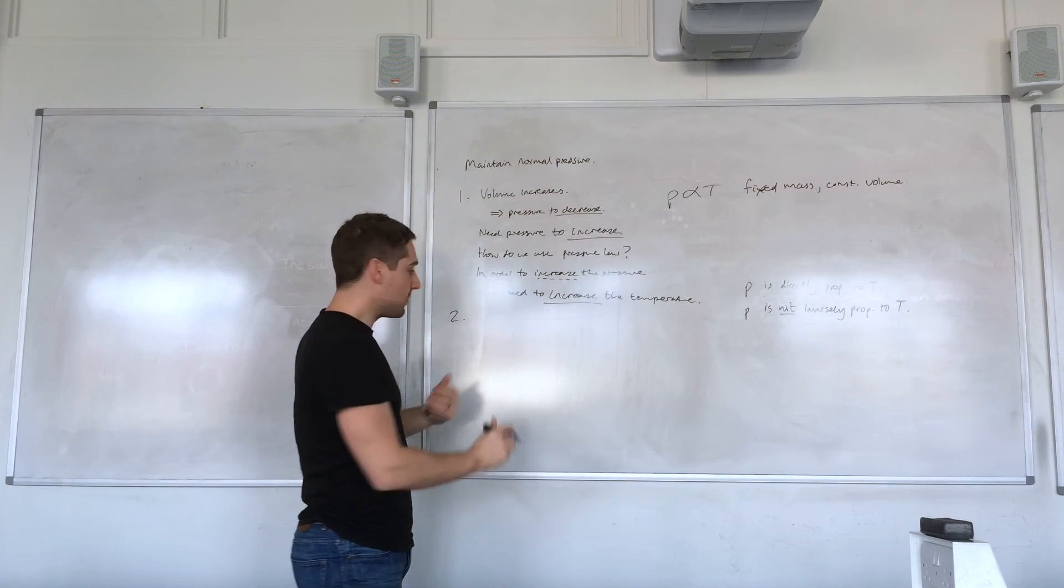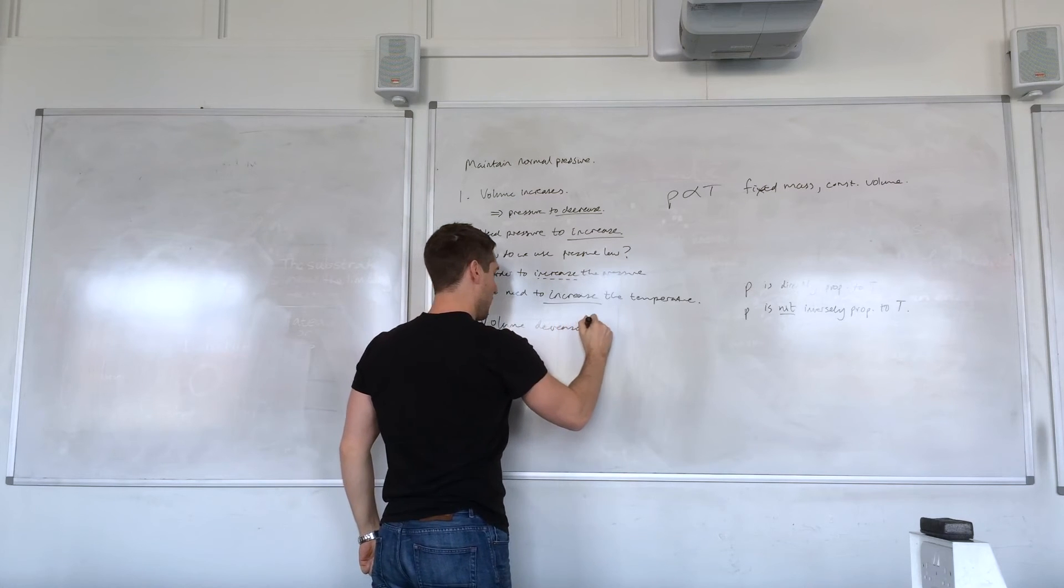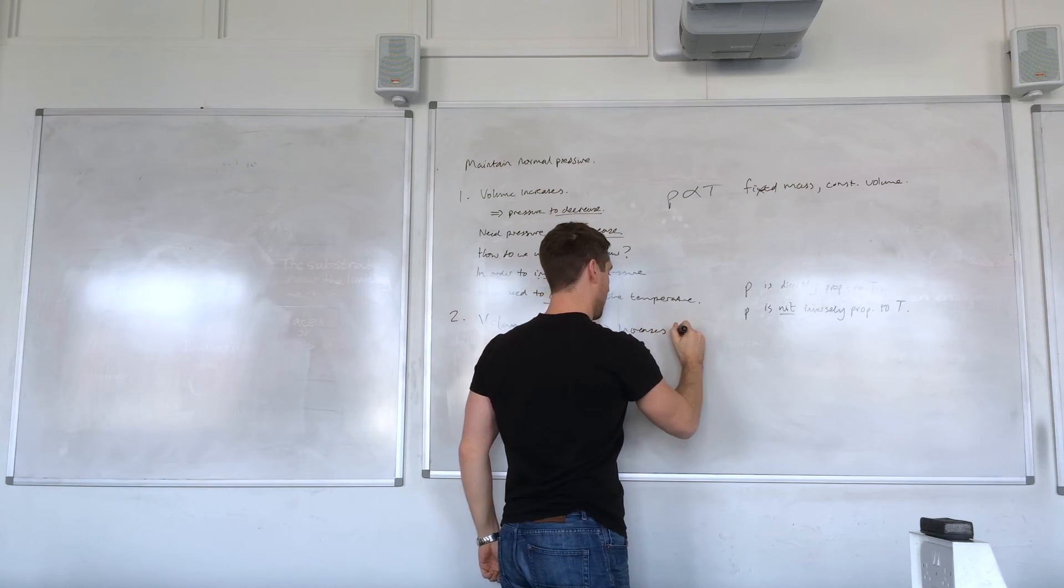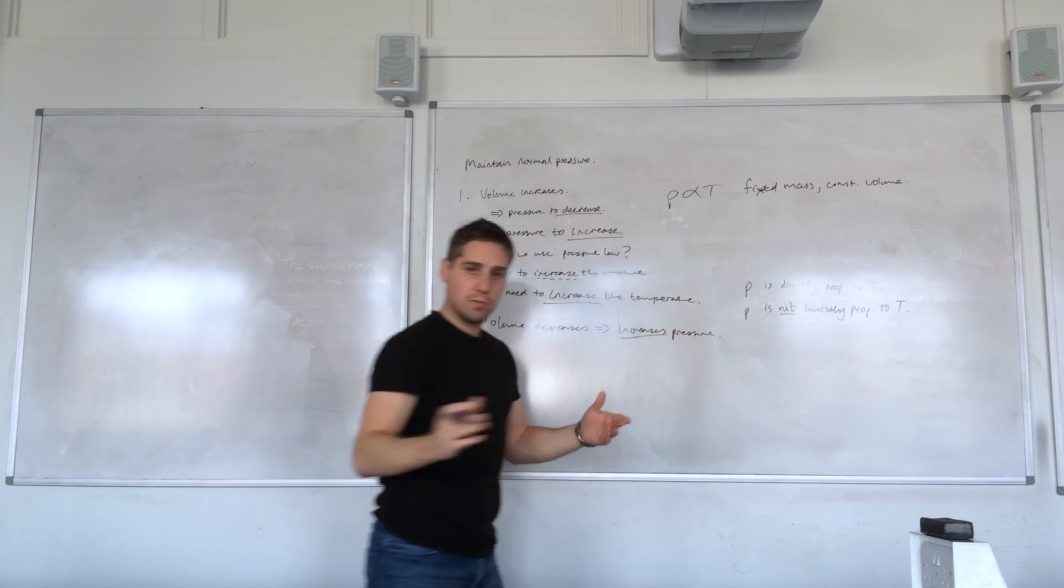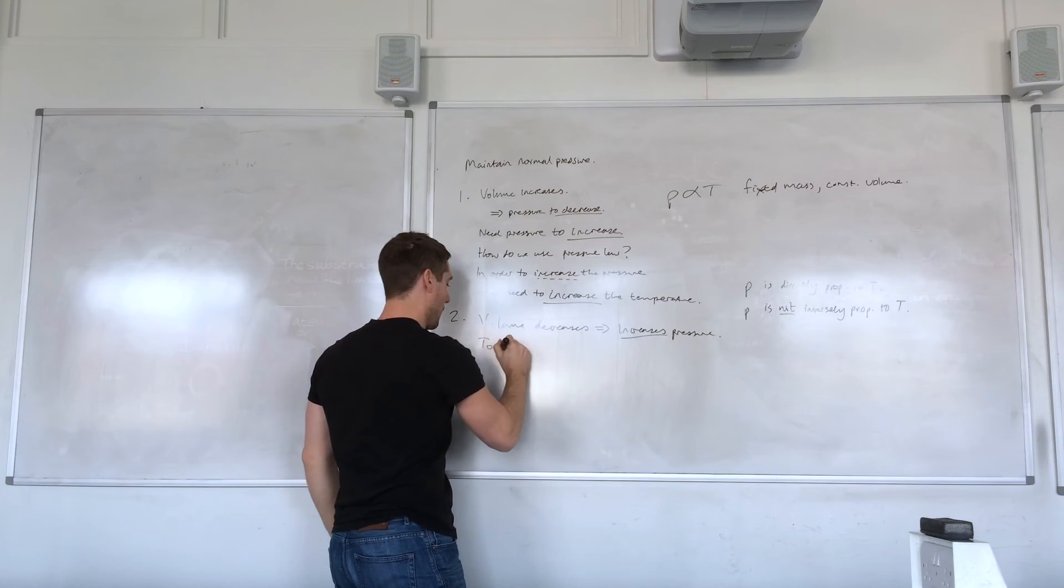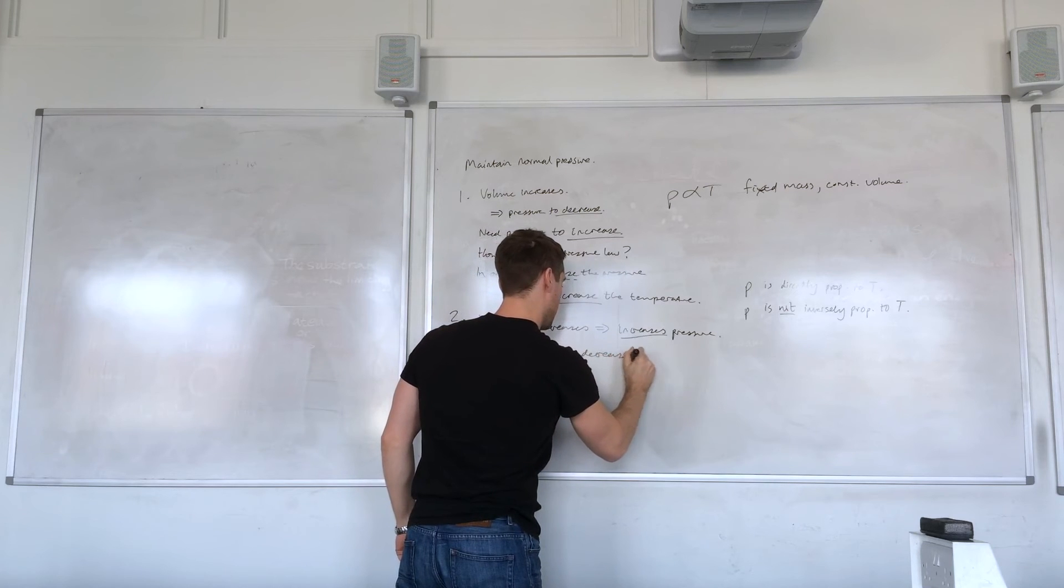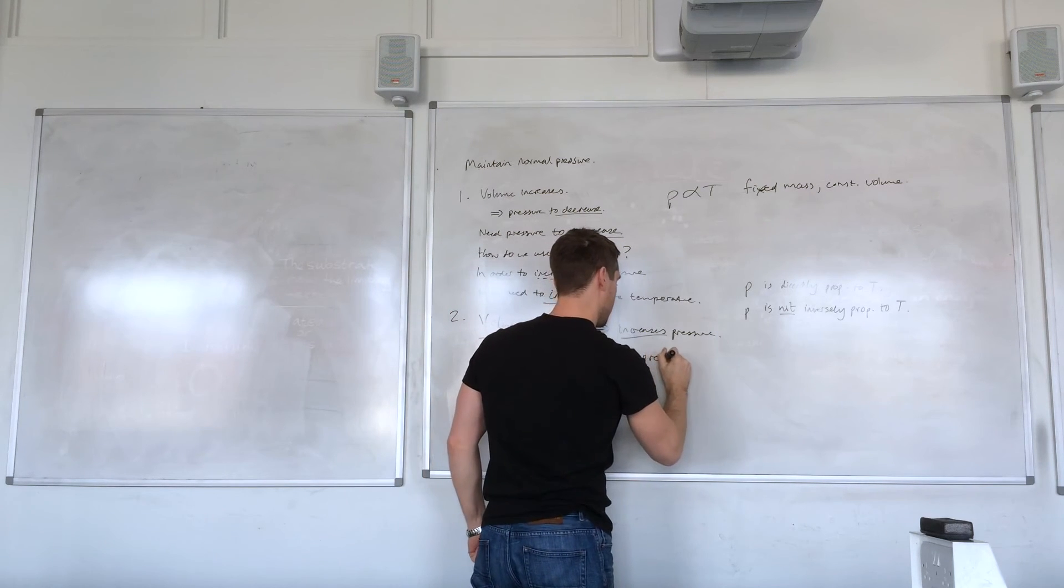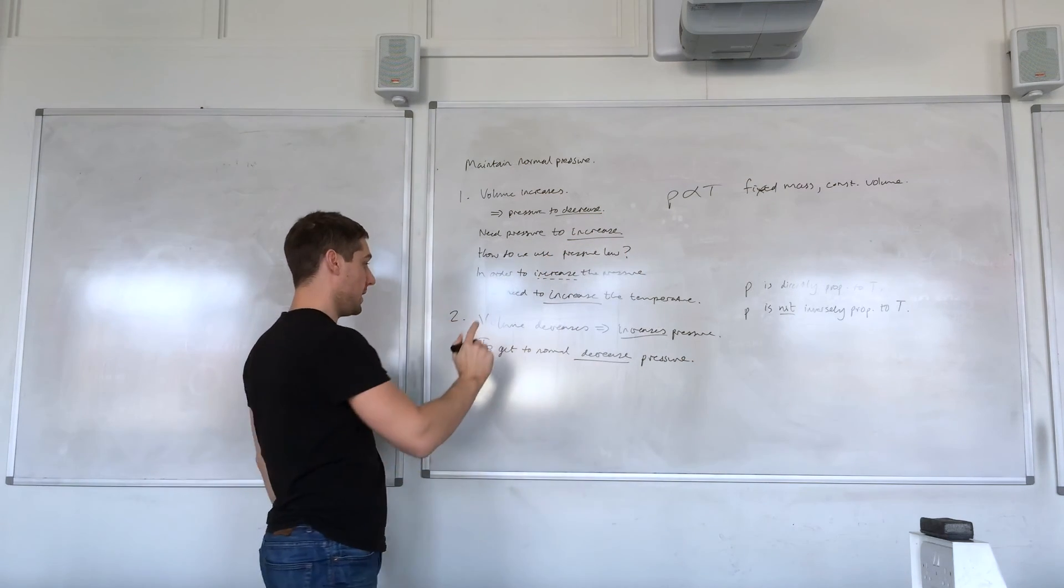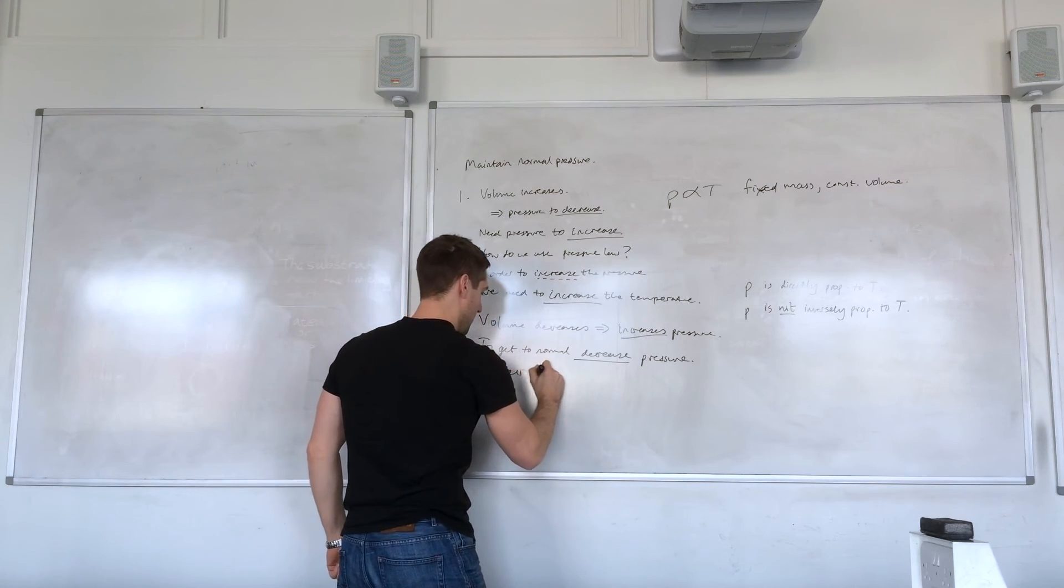In the second case, the volume decreases and that increases the pressure. What do we need to do to get back to normal operating pressure? We need to decrease it. That's decrease the pressure. How do we do that using the pressure law? We need to decrease the temperature.